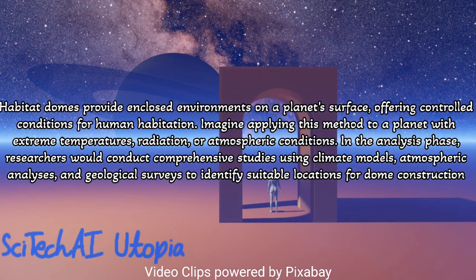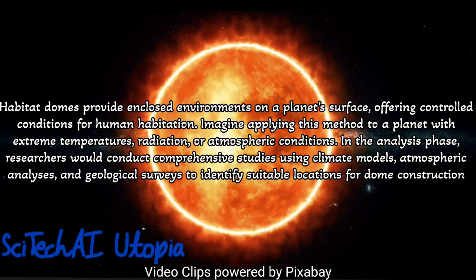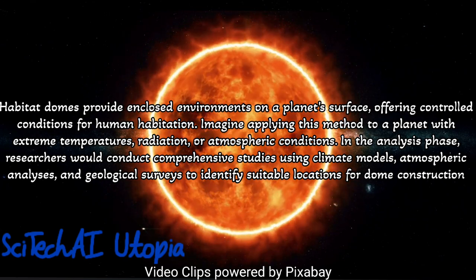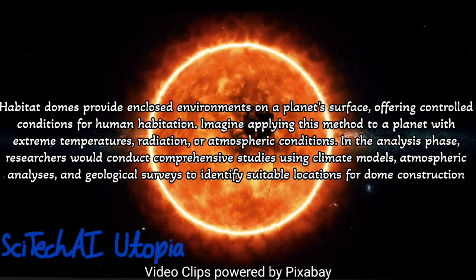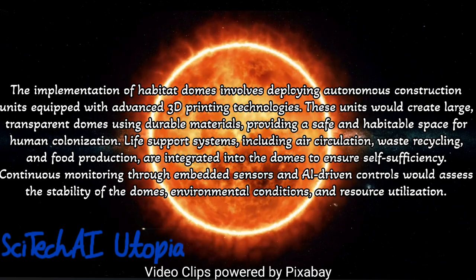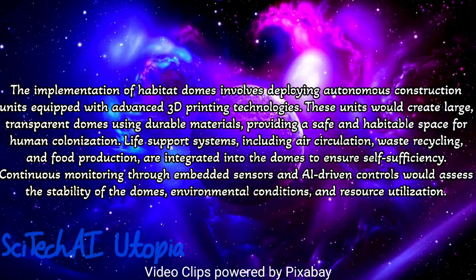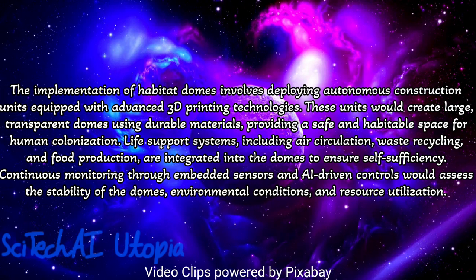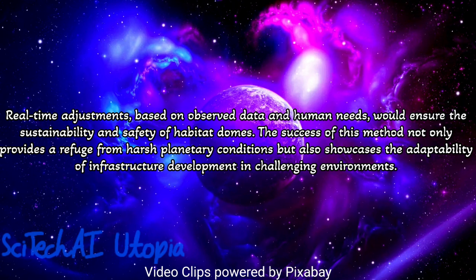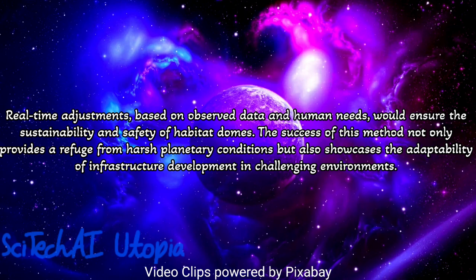Method 16: Habitat Domes. Conduct a detailed analysis of the target planet's atmospheric conditions, temperature variations, and radiation levels to design habitat domes that can sustain human life. Develop advanced materials for dome construction, considering durability, insulation, and resistance to external environmental conditions. Implement a modular design for habitat domes, allowing for scalability and flexibility in accommodating various functions such as agriculture, housing, and recreational spaces. Integrate life support systems within the domes, including air circulation, waste management, and water recycling, to create a self-sustaining environment. Consider energy sources such as solar panels or advanced power systems to ensure long-term viability.